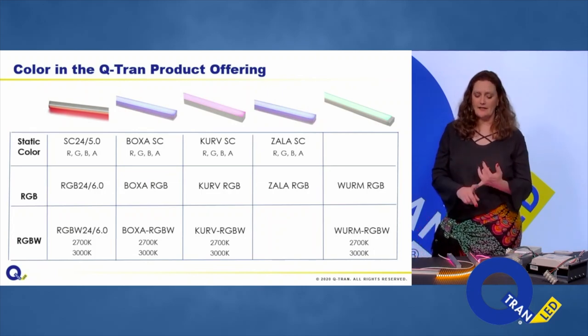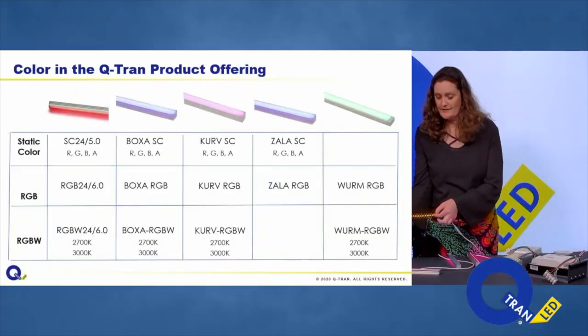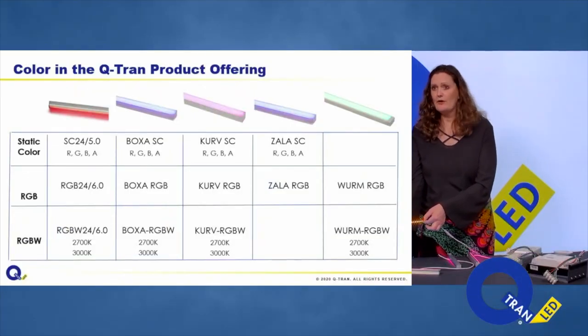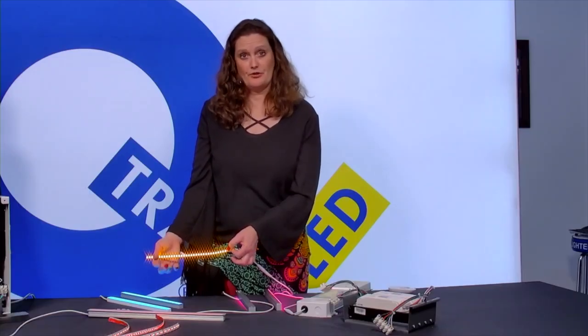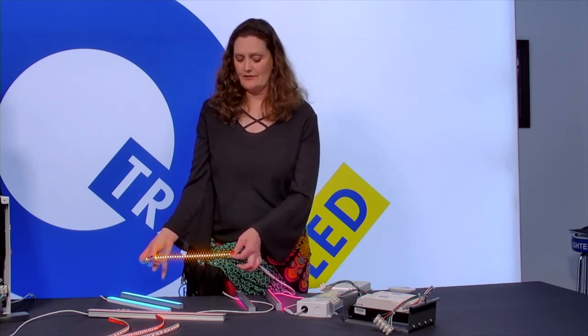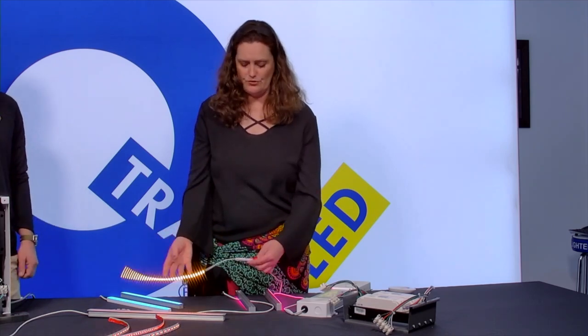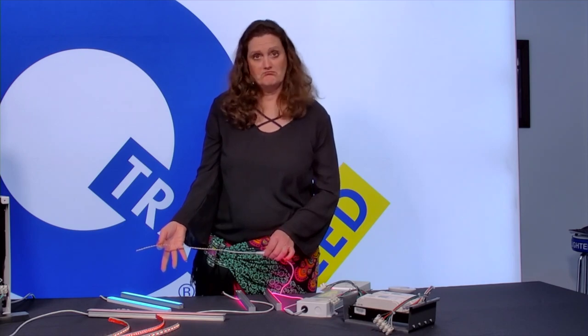We have static color, RGB (which we call dynamic color), and RGBW (also dynamic color). Our static color comes in red, green, blue, and amber. Our amber is a turtle-friendly amber, and our red is also turtle-friendly. This product performs just like a static white strip — it's a single channel of control, two low-voltage wires, and it dims as a single chip.